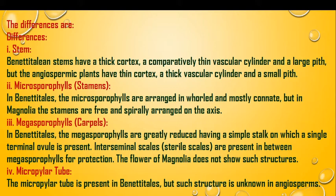In case of the stem, the Bennettitalian stem has a thick cortex, a comparatively thin vascular cylinder, and a large pith. But the angiospermic plant has a thin cortex, a thick vascular cylinder, and a small pith. These are some of the differences observed.